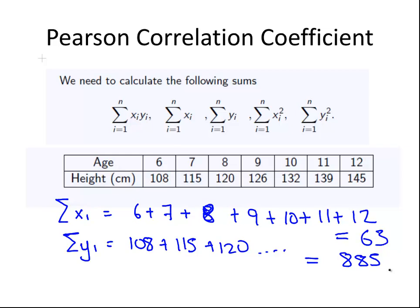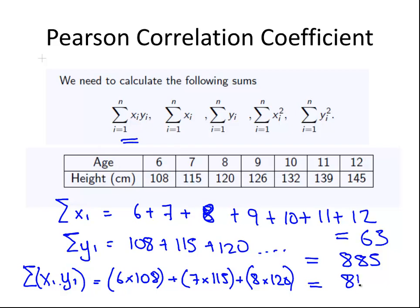Those two are straightforward, but now we'll have a go at this one: the sum of xi times yi. In each case, multiply the corresponding values out and then add them all up together. That is 6 times 108 plus 7 times 115 plus 8 times 120. There's a lot of laborious calculator work here. We add all of those up and we get 8136. So we've done this one, this one, and this one.